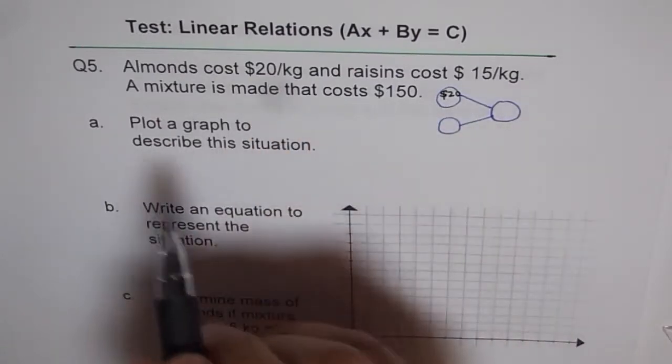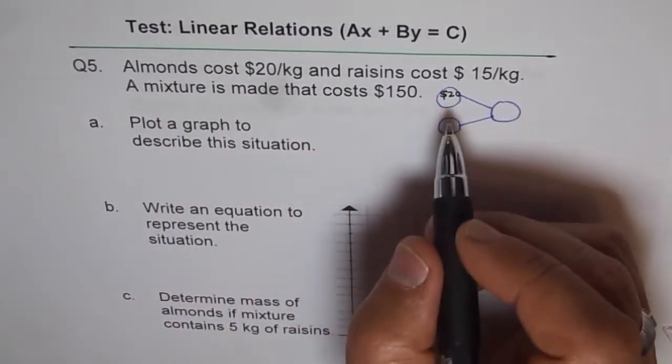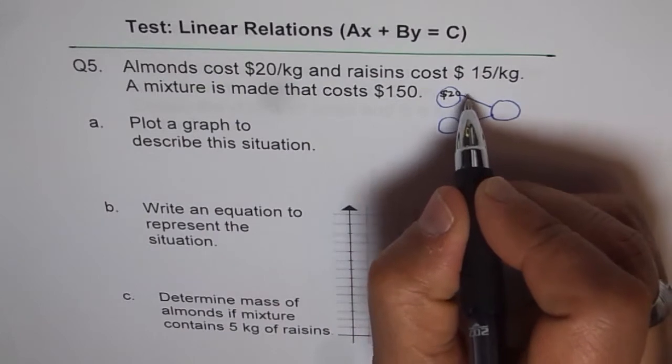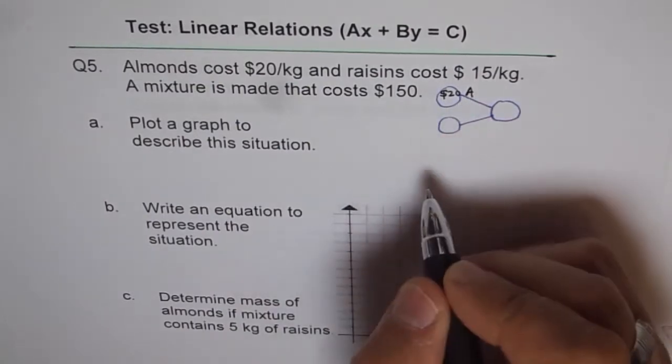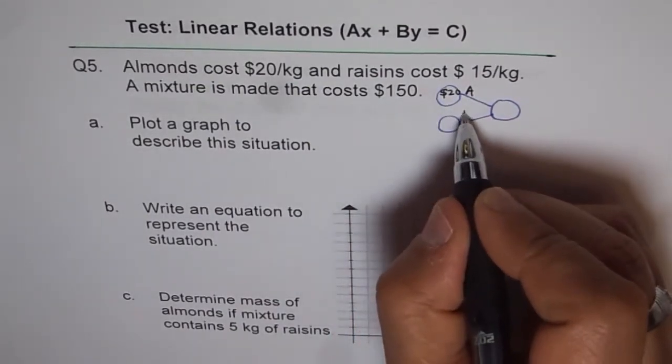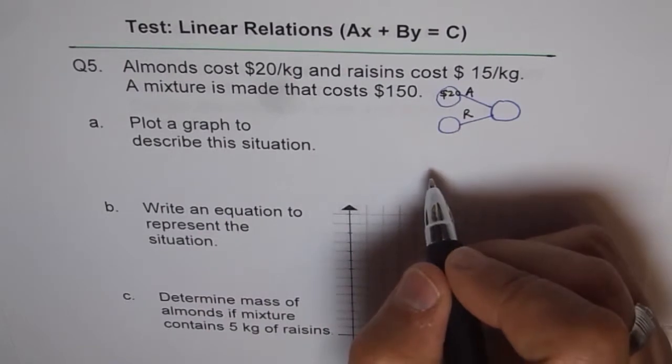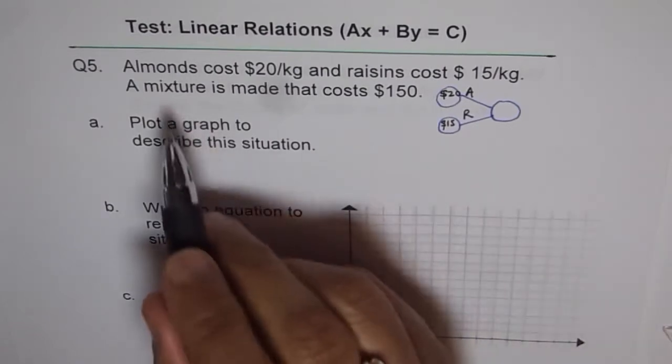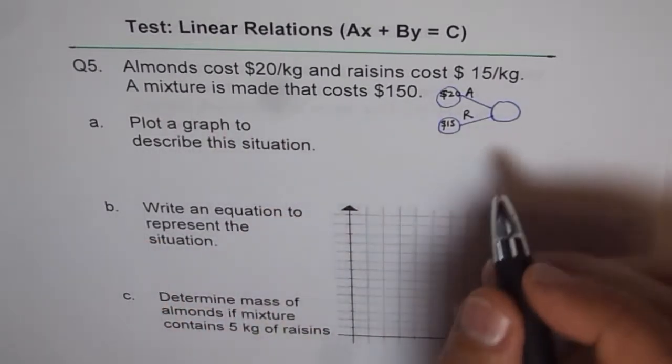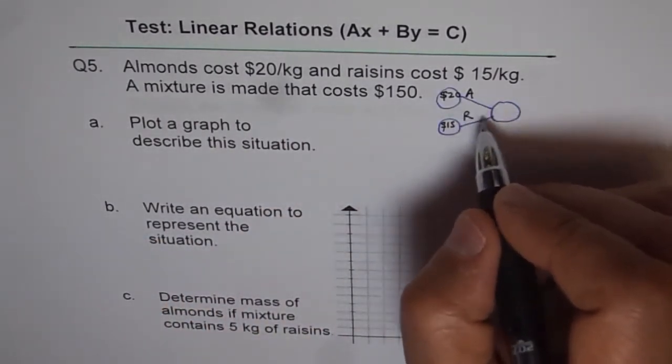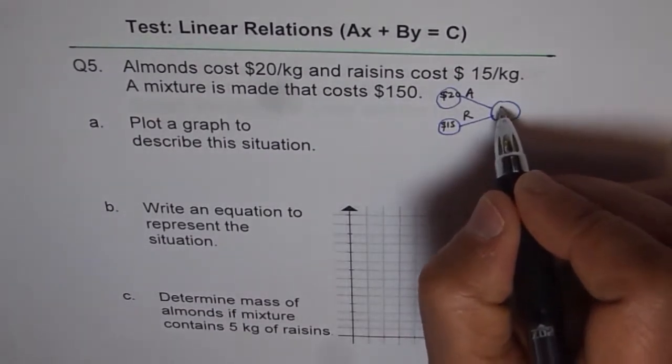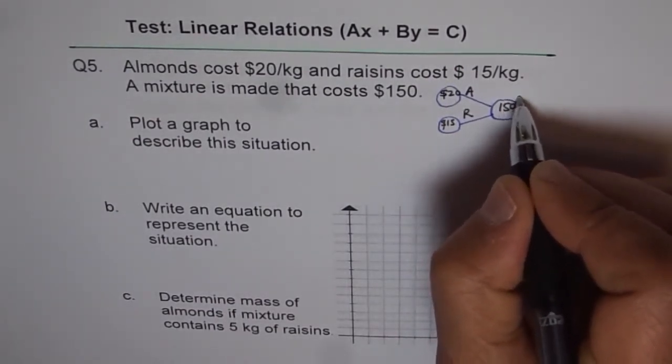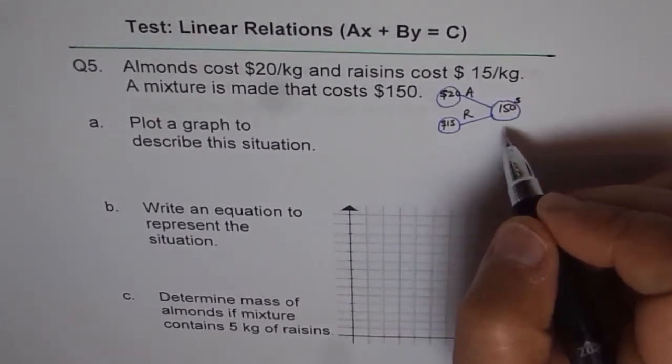And let us say almonds are represented by variable A. And then raisins, let me represent that by R. And the cost of raisins is $15 per kg. Now a mixture is made that costs $150. And whatever we make, that will cost $150. That is the thing.